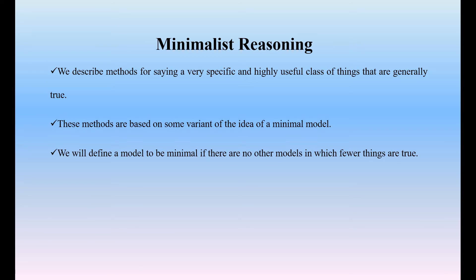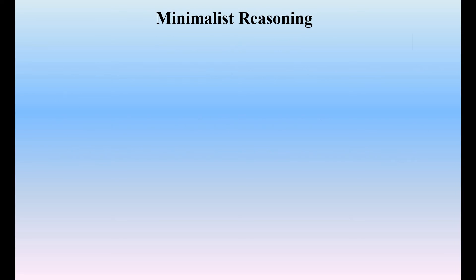Whenever we have some things, the useful class of things that are becoming true, we focus on those — only the true things. Very specific and highly useful class of things that are normally true. This particular model focuses on true values based on the minimal model, meaning there is a very small set of true values. We define a model to be minimal if there are no other models in which fewer things are true. That particular group of true values is called the minimal model, and the reasoning we use for that is called minimalist reasoning.